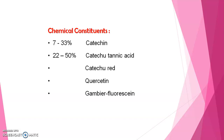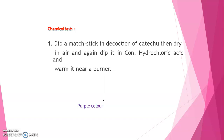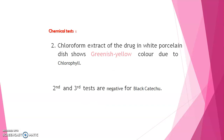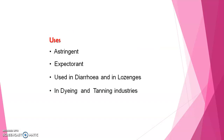Chemical tests for pale catechu: Take a decoction of catechu, dry in air, then add concentrated hydrochloric acid and warm near a burner — it gives a purple color. The chloroform extract of the drug on white filter paper shows greenish-yellow color due to the presence of chlorophyll. In the vanillin test, the drug shows pink or red color with vanillin.